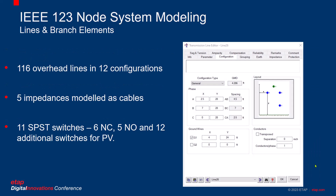Moving on to modeling lines and branch elements. There are a total of 116 overhead lines in 12 different configurations. There are five cables which have been modeled using impedances since the admittance band matrix was available. Among the switches, six are normally closed and five are normally open. There are 12 additional switches provided so as to switch in and switch out the PV arrays for use later.